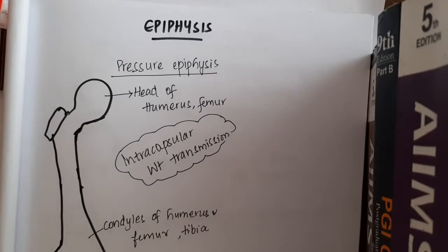What are epiphysis? Epiphysis are the two ends of the bones. These ends of the bones which ossify from the secondary ossification centers are called as epiphysis.